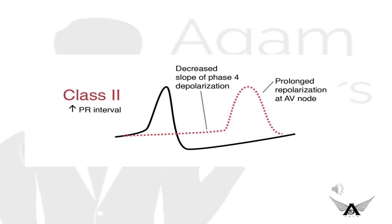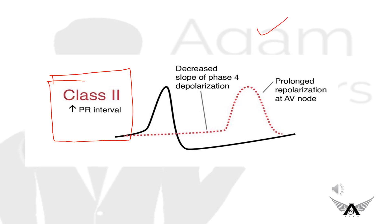Class 2 and Class 4 drugs deal with the slow response action potential, whereas Class 1 and Class 3 deal with the fast response action potential. In Class 2, the graph shows a decreased slope of phase 4 depolarization and a prolonged repolarization at the AV node.